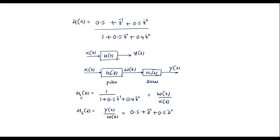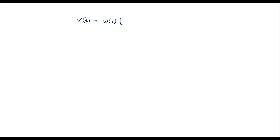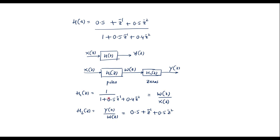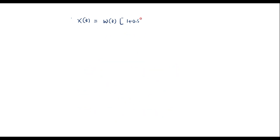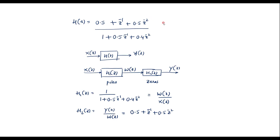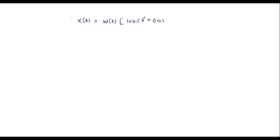For the H1(Z) system, cross-multiplying gives X(Z) equal to W(Z) times (1 plus 0.5 Z inverse plus 0.4 Z power minus 2). Expanding this, X(Z) equals W(Z) plus 0.5 Z inverse W(Z) plus 0.4 Z power minus 2 times W(Z).